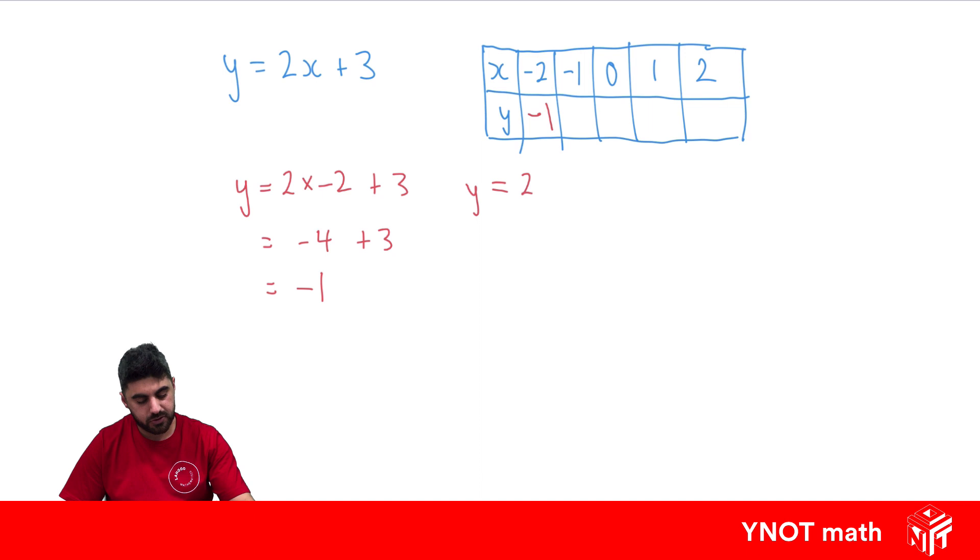Let's do minus 1. So it's 2 times x. We know x is minus 1 this time, plus 3. So y is going to equal 2 times minus 1 which is minus 2 plus 3. And this time we're going to get 1. Minus 2 plus 3 is 1. And that's 2 times 0 is 0. 0 plus 3 is 3. That's our next value here.